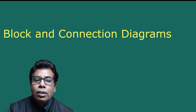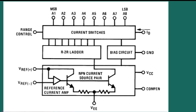Let us see the block diagram. The inputs A1 to A8 are given to the current switches, and here we have the R2R ladder which is the basic technique of the D-to-A converter. There are bias circuits and the reference current amplifier. V reference plus, V reference minus, then VCC — these pins are used for the reference voltage and generating the supply.